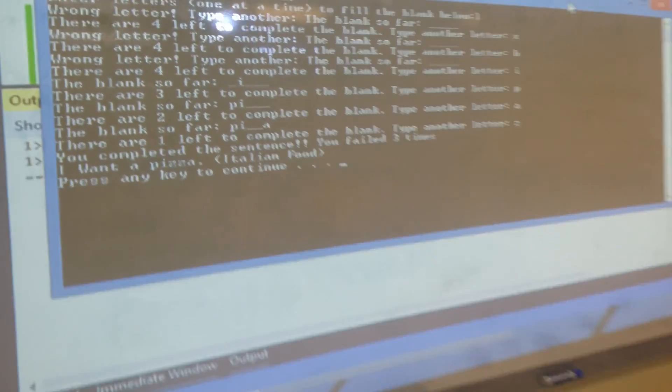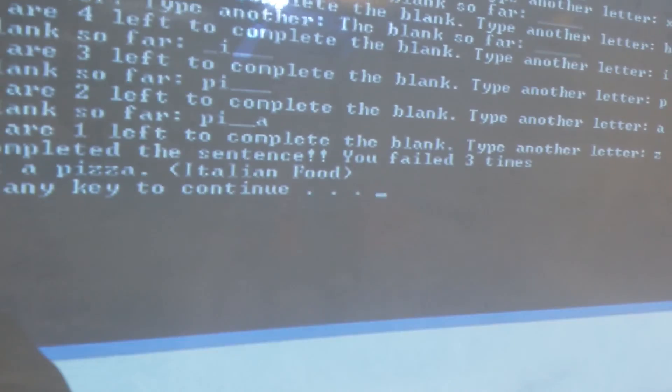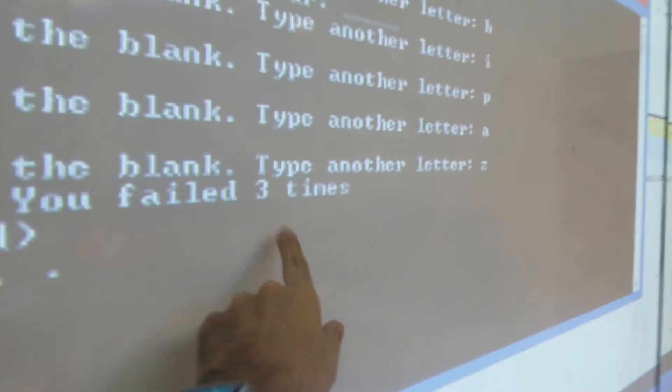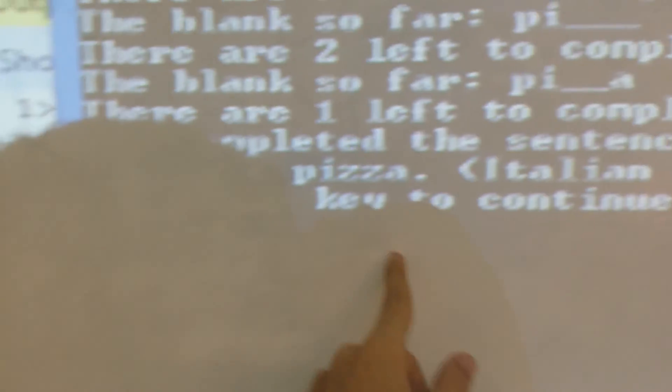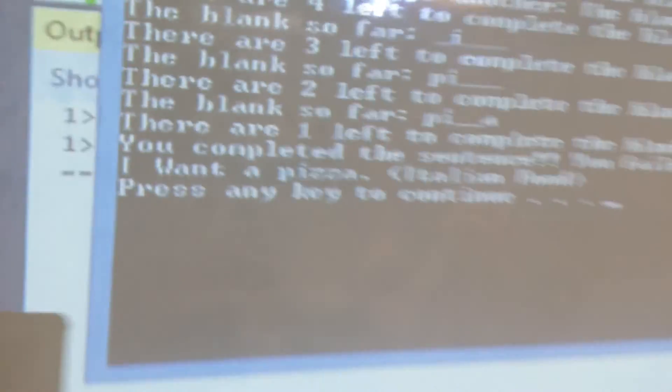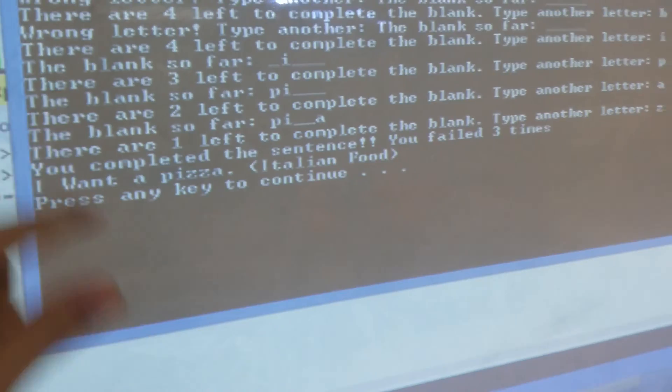Oh it was C, so we completed the sentence and you failed three times. It says you failed three times but the sentence is I want a pizza. And here is about it, it is not Italian, technically it's Greek food. Yes I know, this is about some, the one that wrote this code doesn't know food.